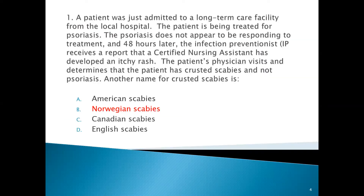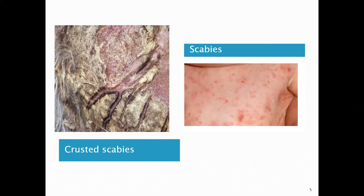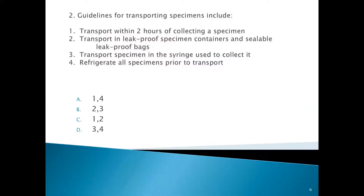I didn't know this answer when I first studied. There's a picture showing the difference: regular scabies has little track marks in the skin, while crusted scabies shows significant exudate and deeply dug-in tracks — it could easily be confused with psoriasis. There are a lot of scabies questions on this test, so it's worth reading the guidance carefully.